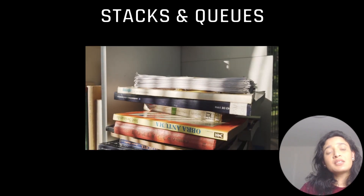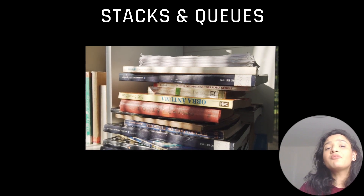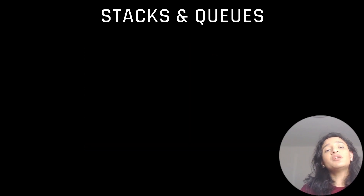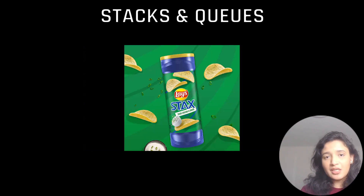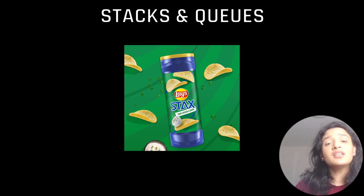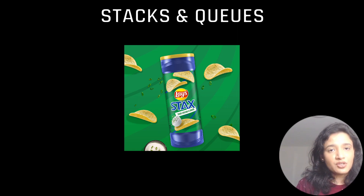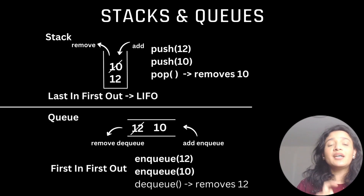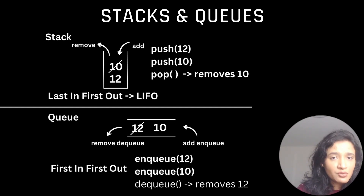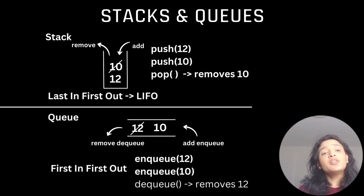A stack can be thought of as a pile of books — whichever book is placed last will be removed first. You are given a container where addition and removal of data can only happen from one end. The strategy a stack follows is Last In First Out (LIFO) — whatever data was inserted last will be removed first.